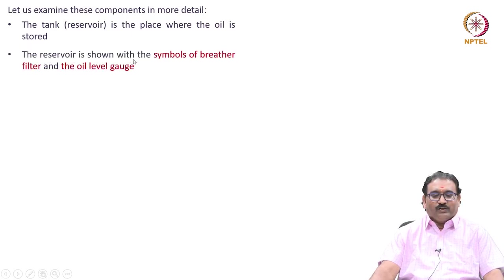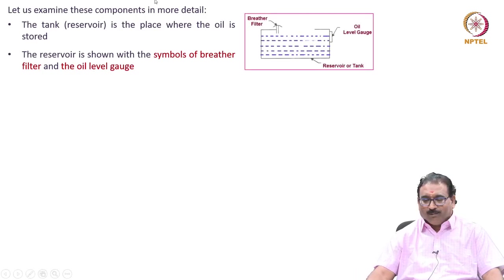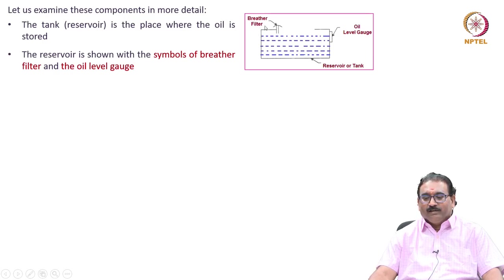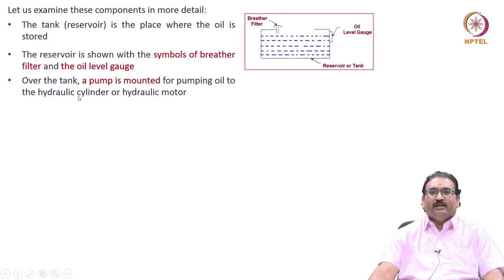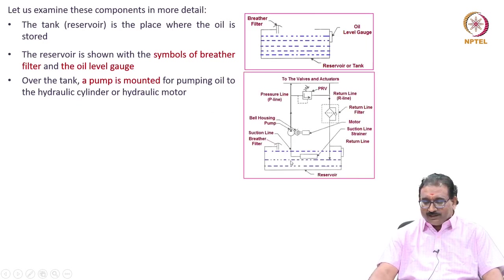The reservoir is shown with the symbols of breather filter and the oil level filter. Now we will see the symbols. This is a reservoir, the breather filter or filler — how it is represented, you will see. This is an oil level gauge. Over the tank, a pump is mounted for pumping oil to the hydraulic cylinder or motor through the valves. All symbolic representations are shown here.